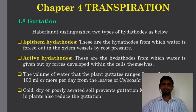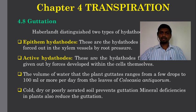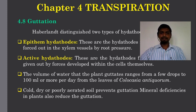The amount of water that the plant guttates ranges from a few drops to 100 ml or more per day from the leaves of Colocasia antiquorum. Cold, dry, or poorly aerated soil prevents guttation. Similarly, mineral deficiency in plants also reduces guttation.